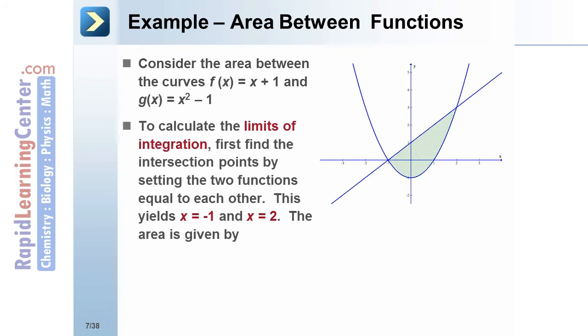To calculate the limits of integration, first find the intersection points by setting the two functions equal to each other. This yields x = -1 and x = 2. The area is given by A = ∫[-1 to 2] [(x + 1) - (x² - 1)]dx, which gives 9/2.